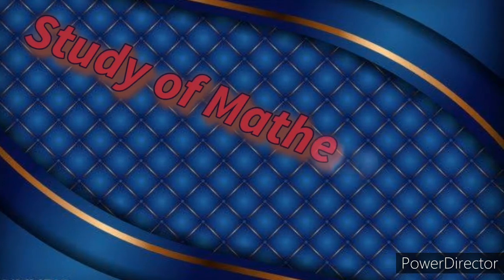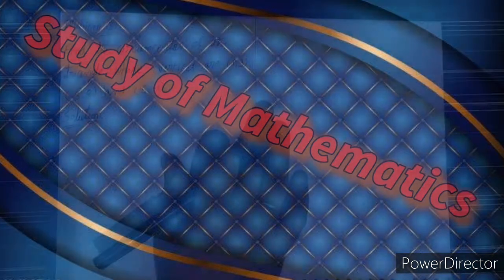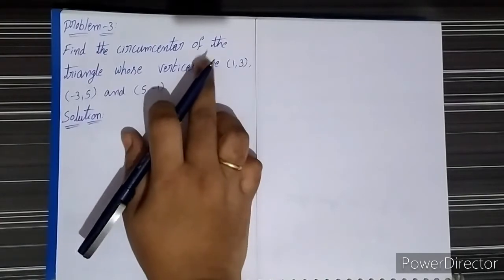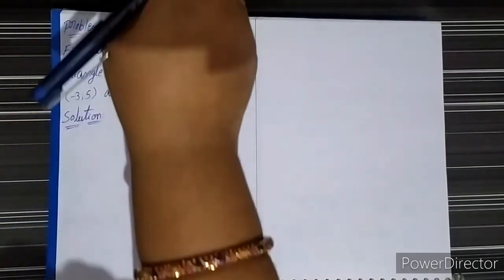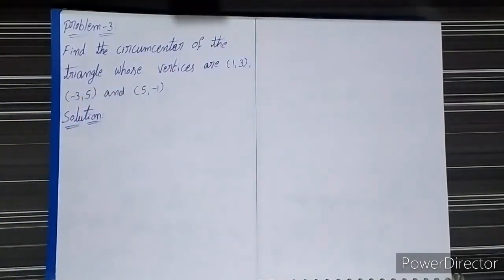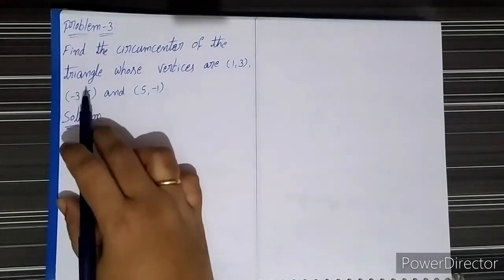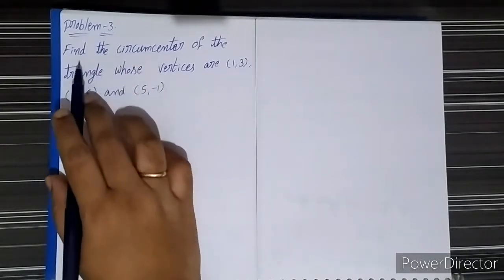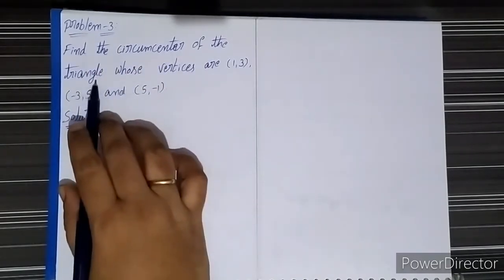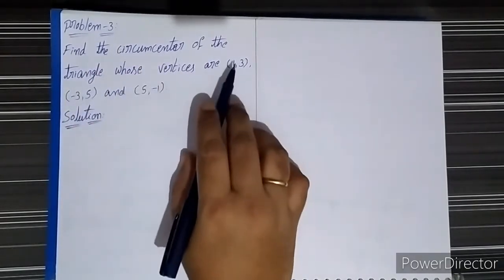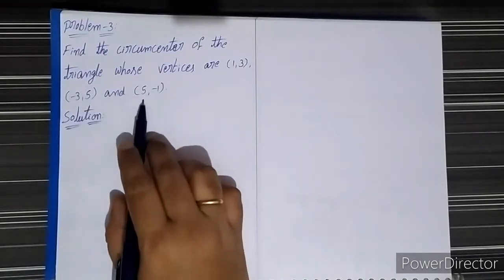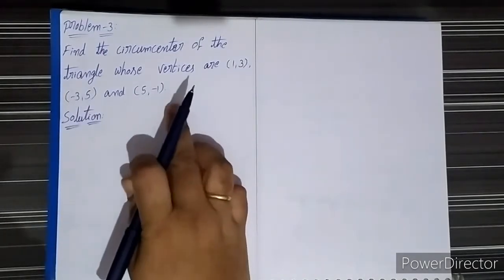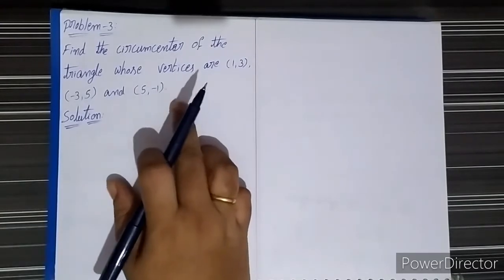Hi, hello friends, welcome to our channel Study of Mathematics. In this we have to solve the next problem. The problem is: find the circumcenter of the triangle whose vertices are (1, 3), (-3, 5), and (5, -1).